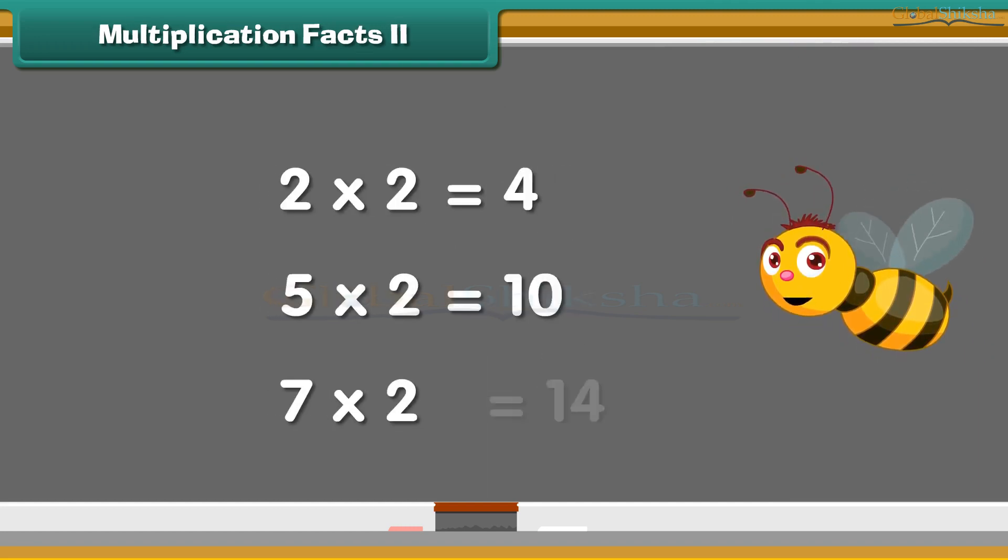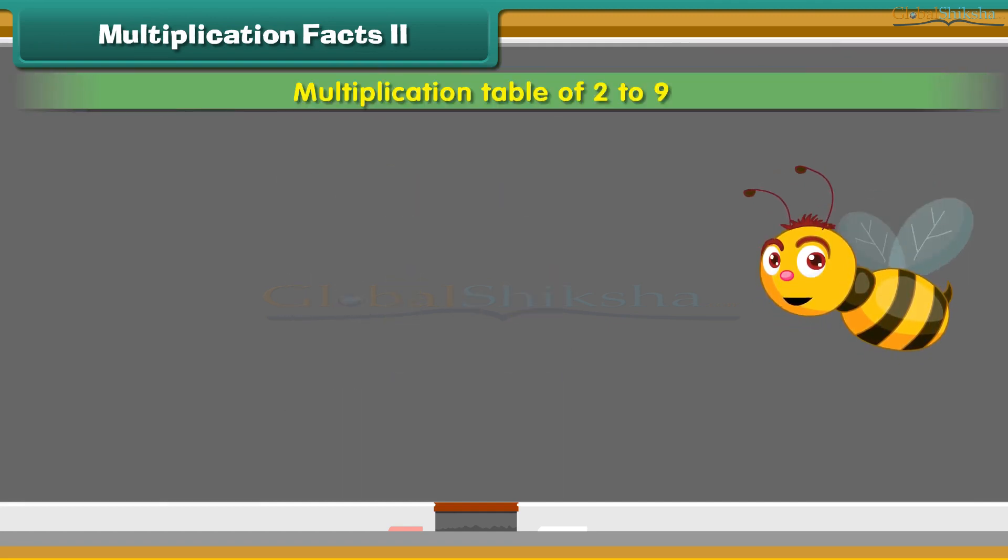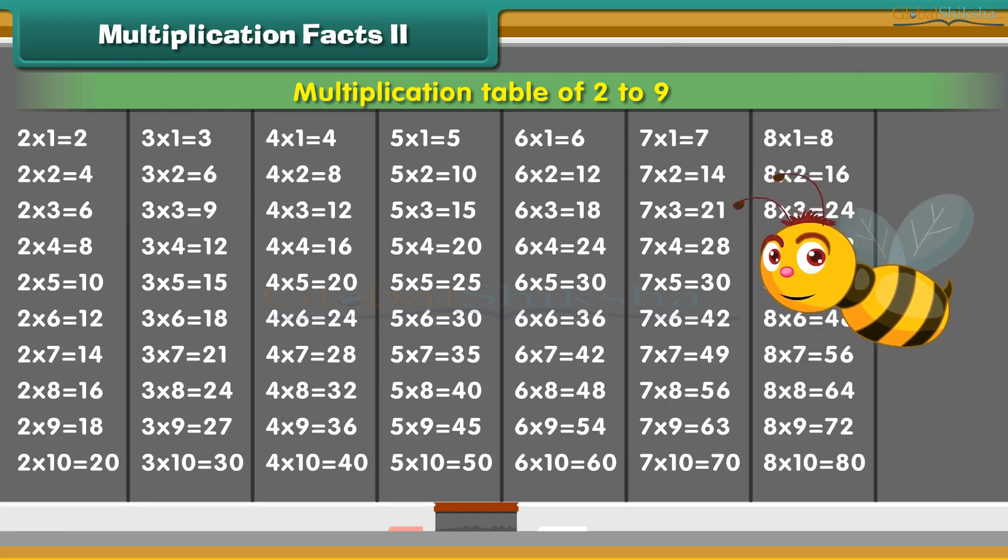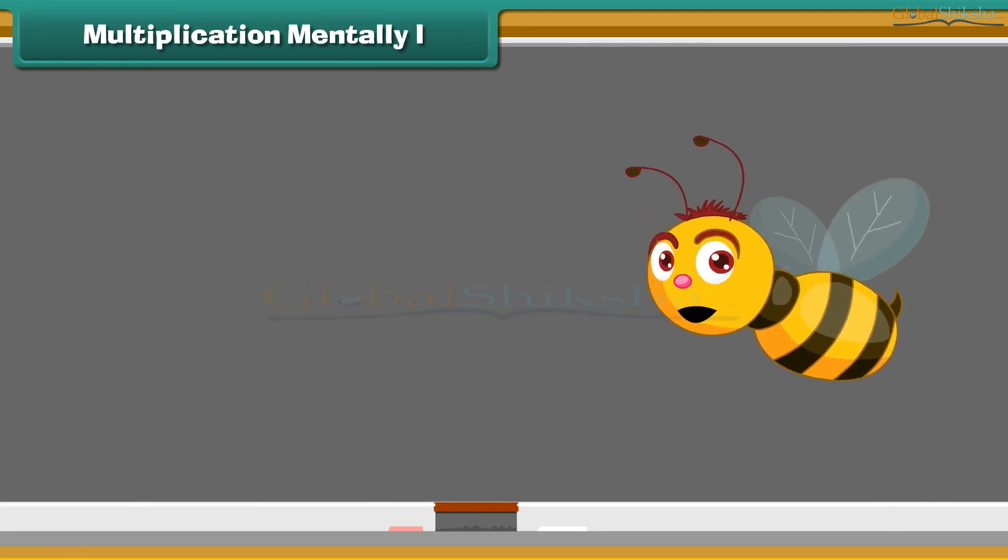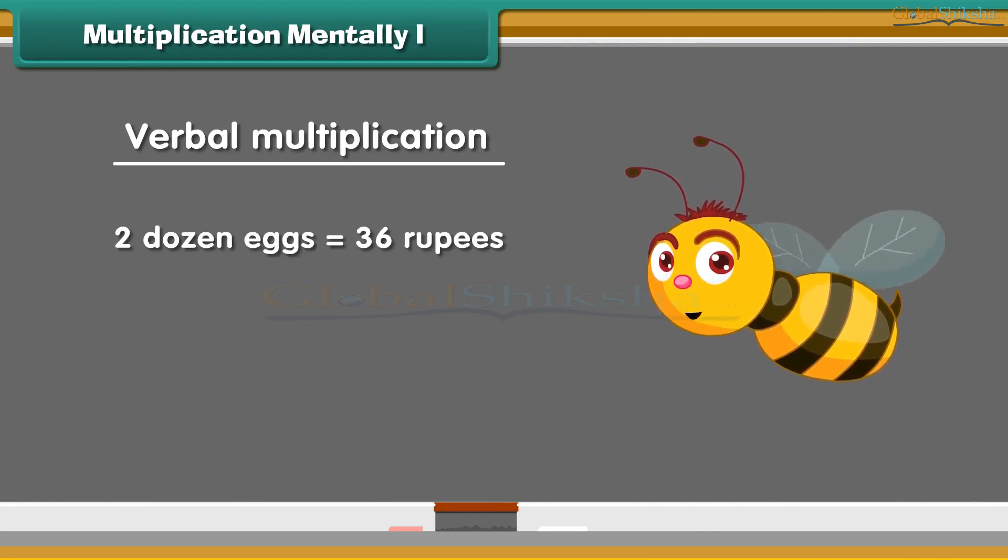The multiplication tables are based on the multiplication facts of different numbers. The multiplication table of 2 to 9 is displayed on the screen. Let us look at some examples of verbal multiplication.